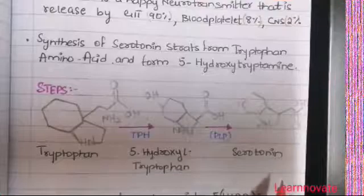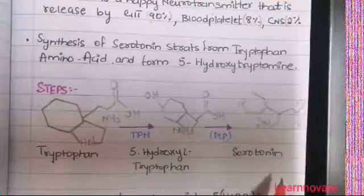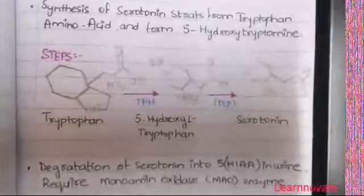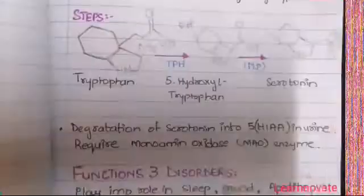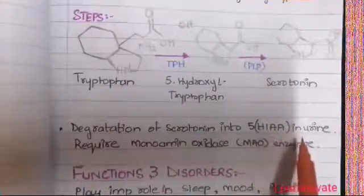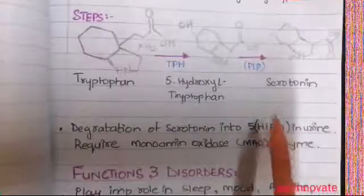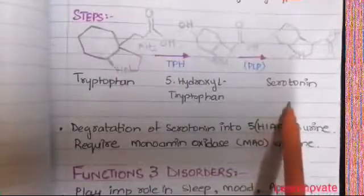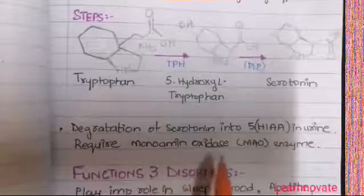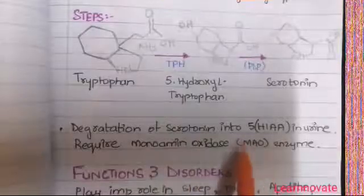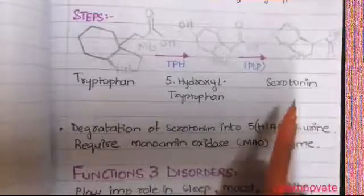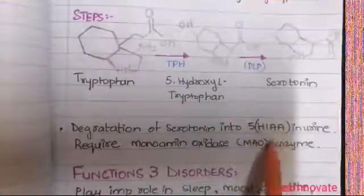If the serotonin that has been produced is degraded, it will be degraded into 5-hydroxyindoleacetic acid, which is the degradation product of serotonin and is excreted in the urine. This degradation requires an enzyme that is monoamine oxidase, or MAO. MAO is a degradative enzyme that converts serotonin into the final product, 5-hydroxyindoleacetic acid, which is then excreted in the urine.